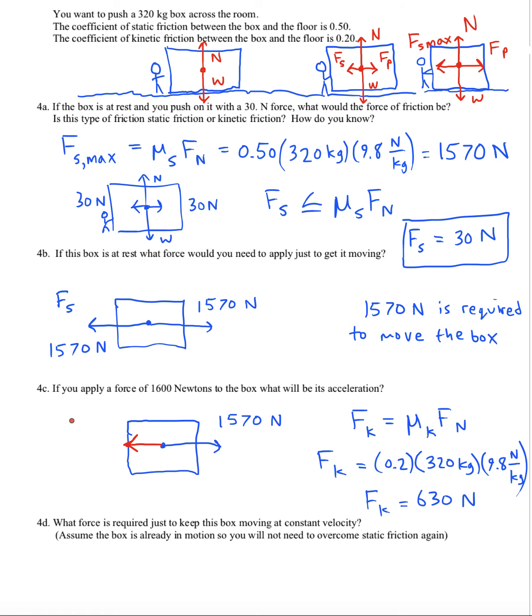Now, what happens is once you get the box moving, we see a drastic imbalance between the force of the push and the friction force. And so this box is going to rapidly enter into an acceleration phase. And the acceleration could be quite large. Let's find out what that acceleration would be. It's going to be the net force divided by the mass. So we'll do 1570 minus 630 divided by 320 kilograms. 2.94 meters per second squared.